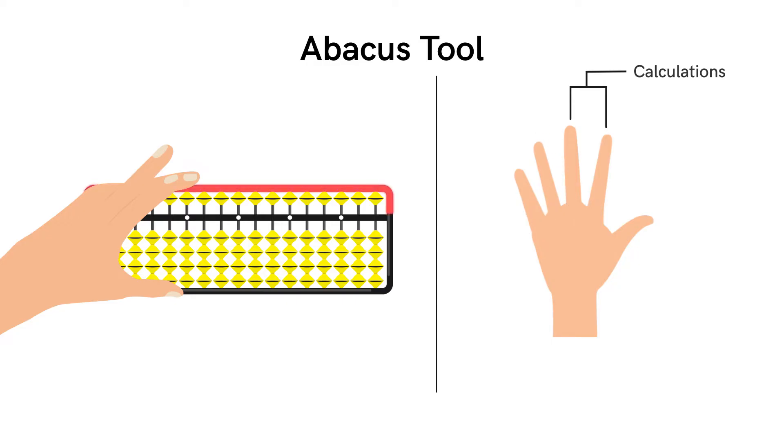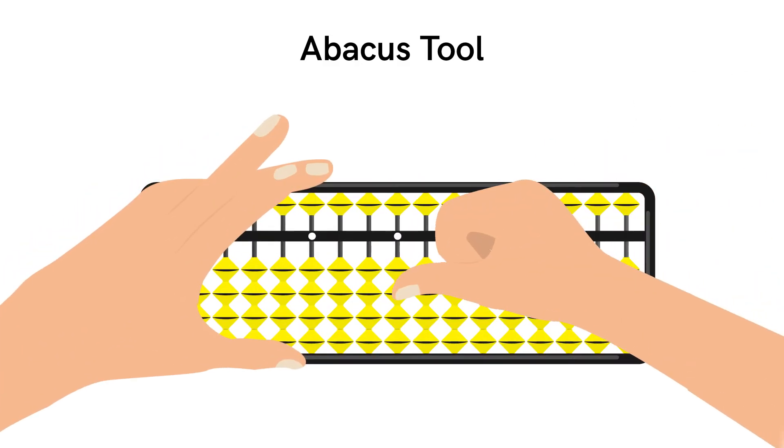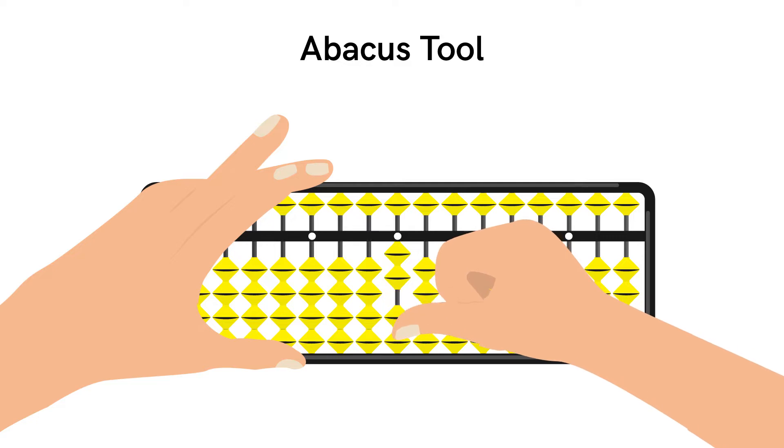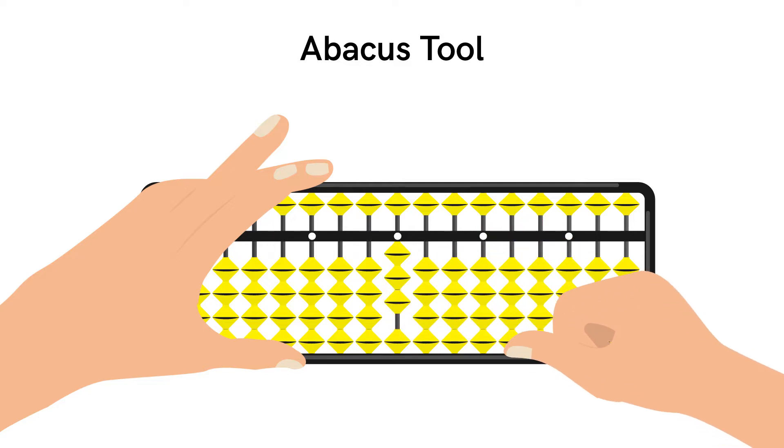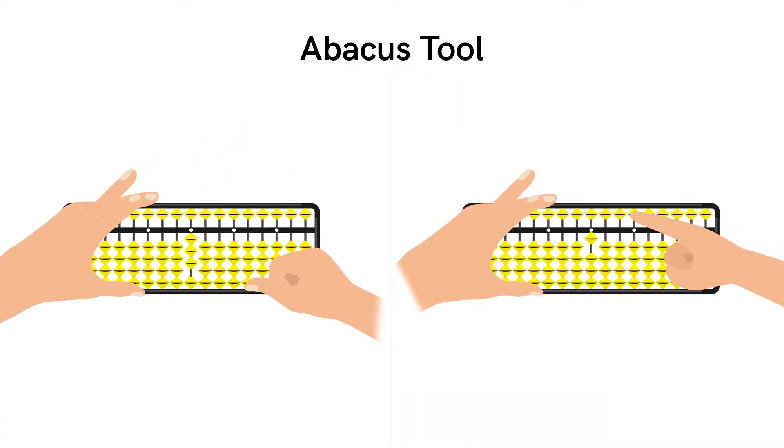We use the thumb of our right hand to move the lower beads upwards to the counting bar. But to move the upper beads down to the counting bar, or to their original position, or to move the lower beads down, we use the index finger of our right hand.